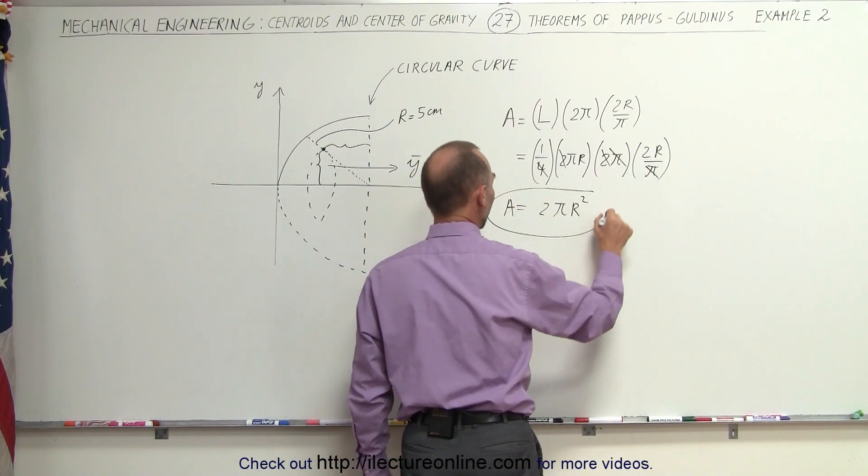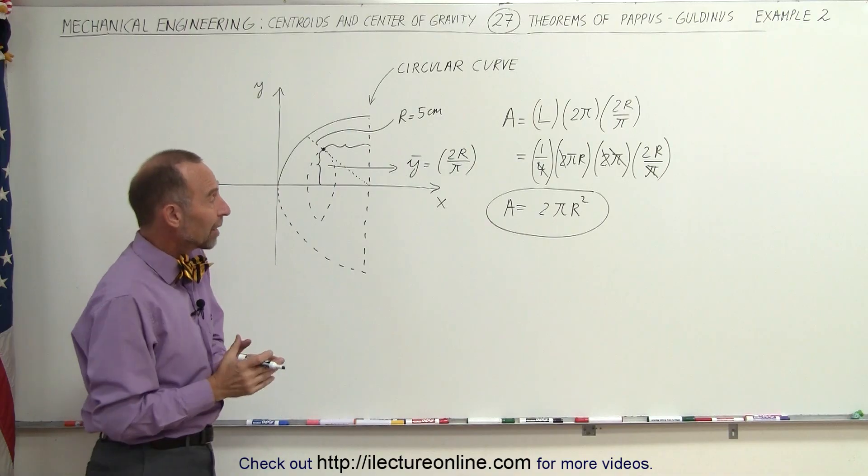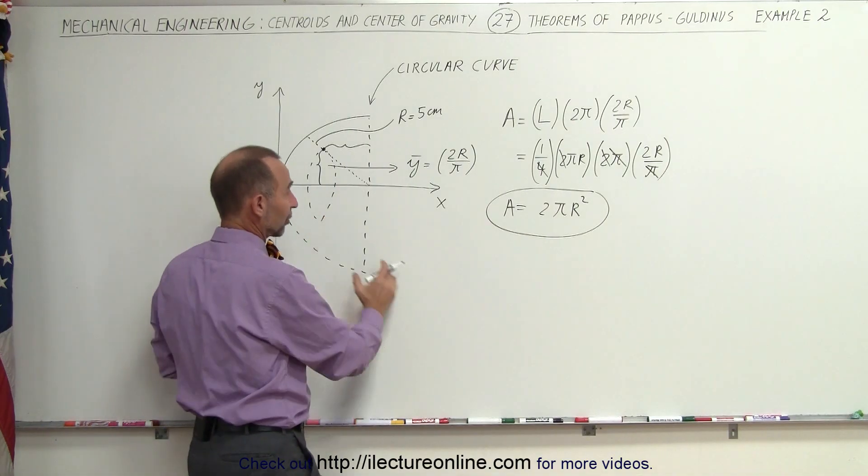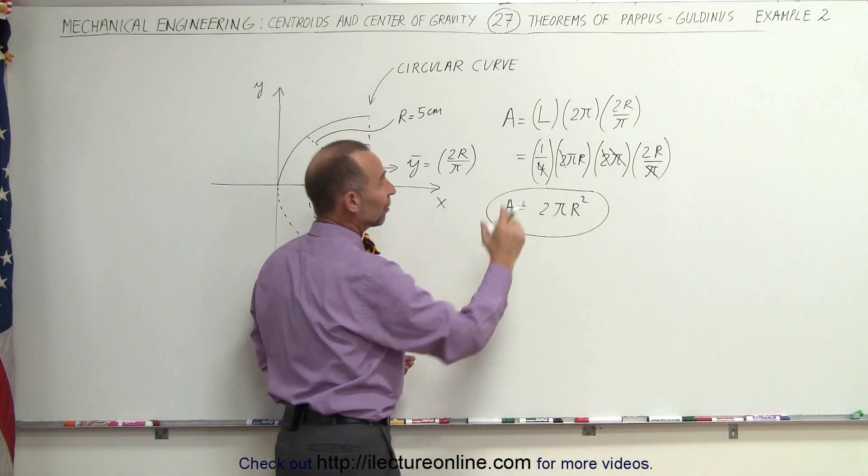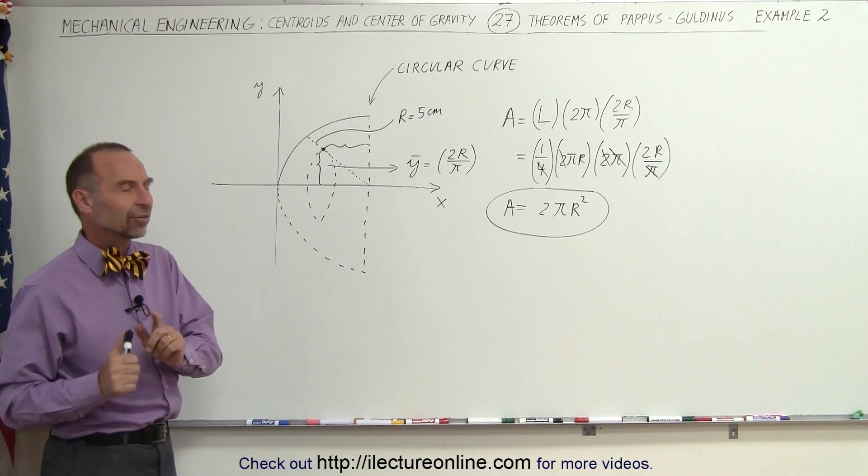And that looks like it's correct, because I realized that the area of a full circle is 4 pi r squared. Since this is a semicircle, I should get half that area. And sure enough, 2 pi r squared is half of 4 pi r squared, which tells us that's correct.